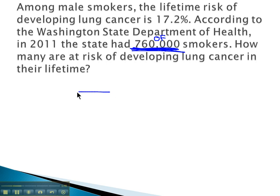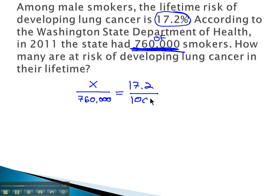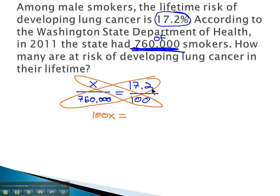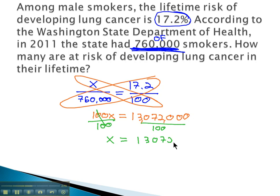Setting up our proportion: is over of equals percent over 100. We don't know the 'is' — the number that are going to get lung cancer. But we do know the 'of': all of the smokers, 760,000. The percent we're given is 17.2% over 100. Multiplying the diagonal, we get 100x equals 760,000 times 17.2, which is 13,072,000. Dividing both sides by 100 tells us x equals 130,720 — so 130,720 Washington smokers will develop lung cancer in their lifetime.